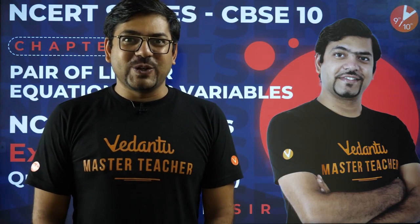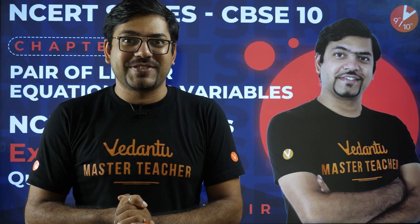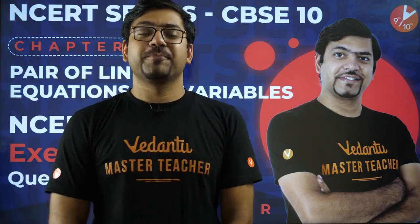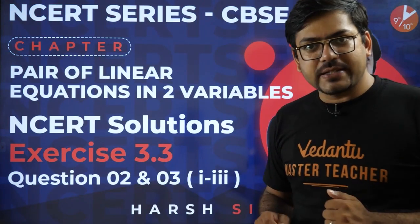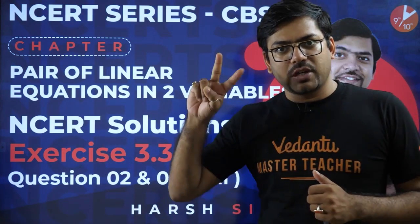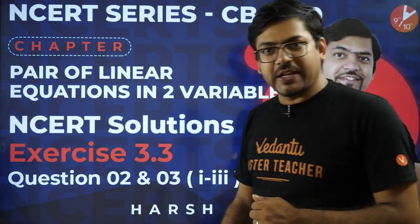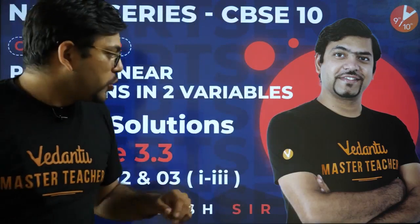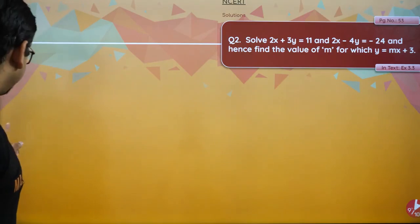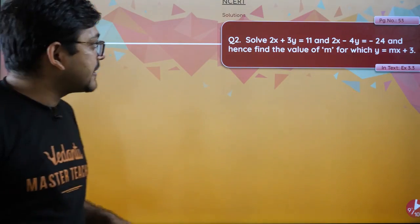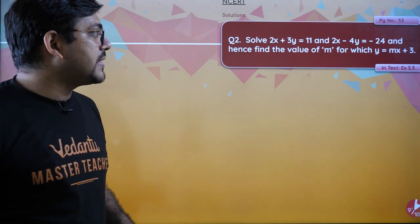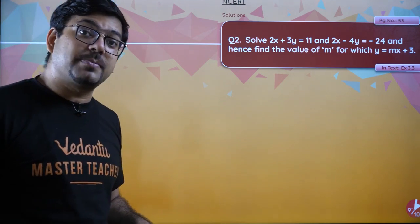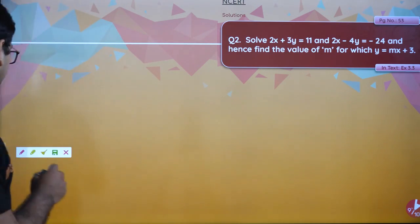Hey guys, good evening and welcome to the session. I'm your master teacher Harsh Priyam. Today we are continuing the NCERT series, doing Exercise 3.3. We have already completed question number one, so now we will talk about question number two and question number three. Question number two says: solve 2x + 3y = 11 and 2x - 4y = -24, and hence find the value of m for which y = mx + 3.